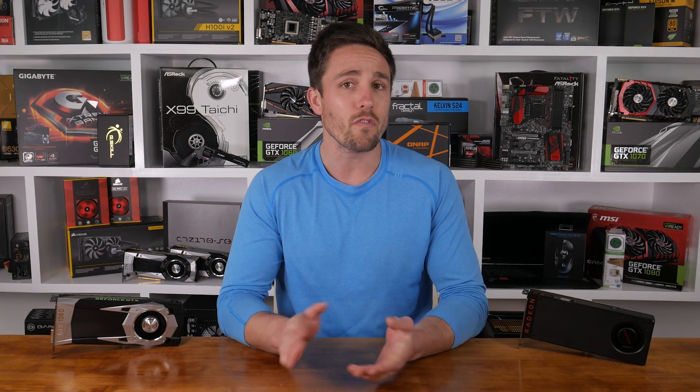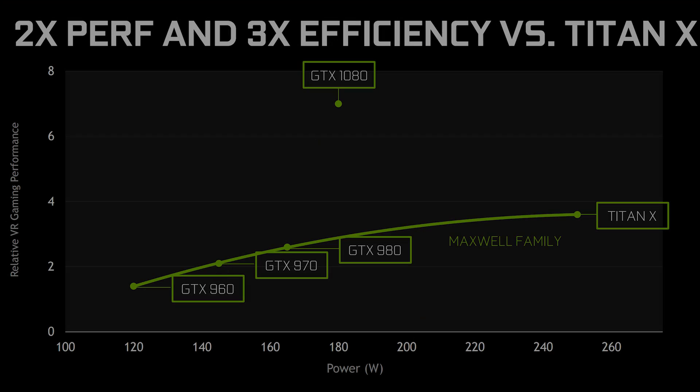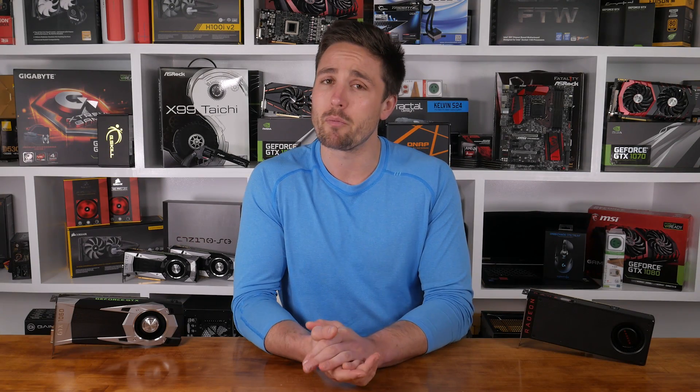Why in a game such as Ashes of the Singularity does Nvidia see no real benefit? And why does AMD come from such poor DirectX 11 performance to such strong DirectX 12 performance? Nvidia would have you believe it's down to the fact that their more recent GPU architectures are already extremely efficient. Therefore, they don't benefit from low-level APIs and the features they offer such as Async Compute. That seems like a pretty convenient answer, but Nvidia might have a point. I feel we are seeing the full potential of their Maxwell and Pascal cards in DirectX 11 titles. They are, after all, extremely efficient when compared to their AMD counterparts.